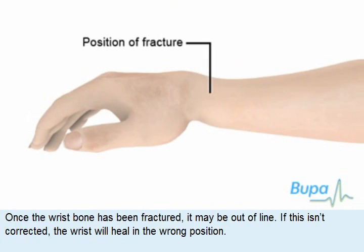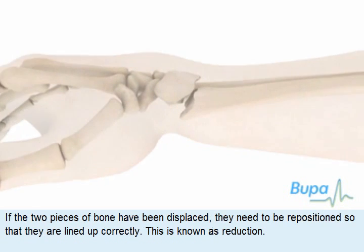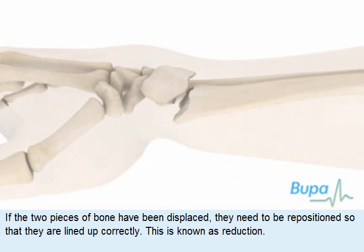Once the wrist bone has been fractured, it may be out of line. If this isn't corrected, the wrist will heal in the wrong position. If the two pieces of bone have been displaced, they need to be repositioned so that they are lined up correctly. This is known as reduction.